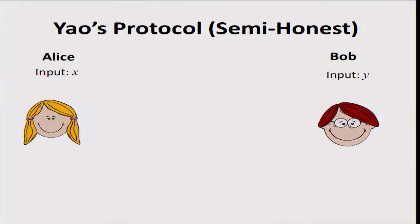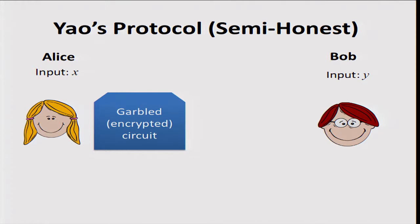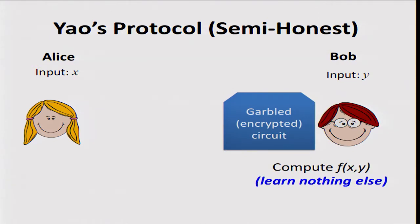Both of these papers look at how to use Yao's basic protocol in order to get malicious security. We'll review in 20 seconds what the basic idea is. Alice and Bob have respective inputs X and Y, and Alice generates a garbled or encrypted circuit — essentially a circuit that can be computed without revealing anything about what's going on inside, in particular it doesn't reveal anything about the inputs. Alice sends that garbled circuit to Bob, and they do something else so Bob can compute the circuit on inputs X and Y. Bob computes the circuit and learns nothing except the output. That's Yao's protocol for semi-honest adversaries.